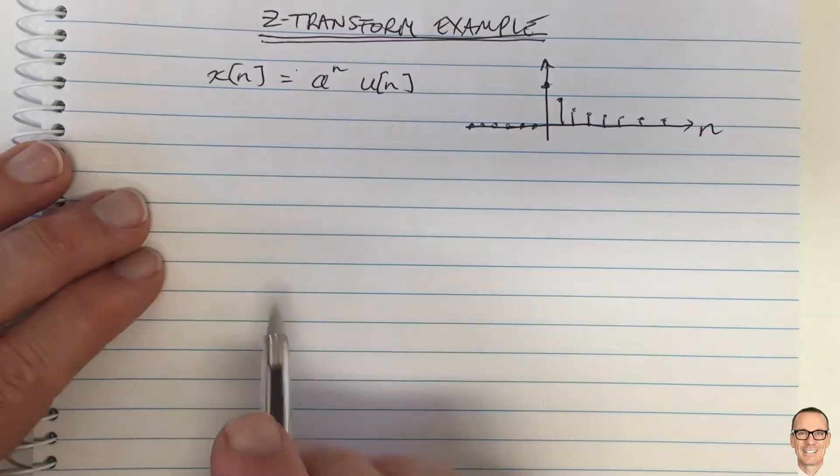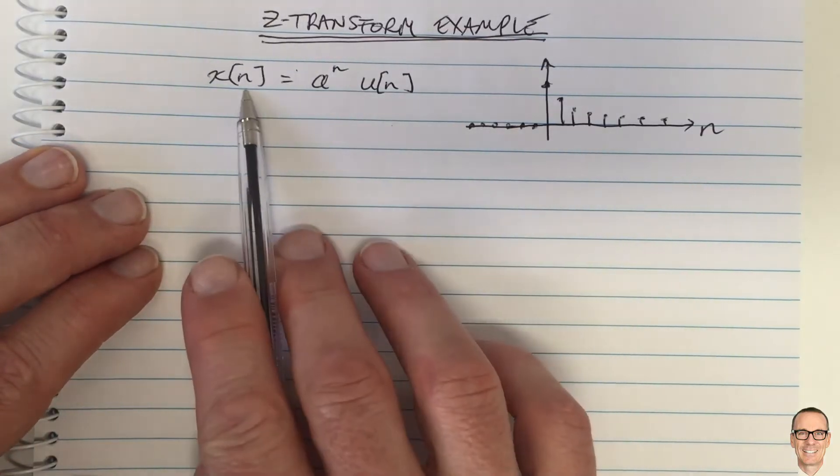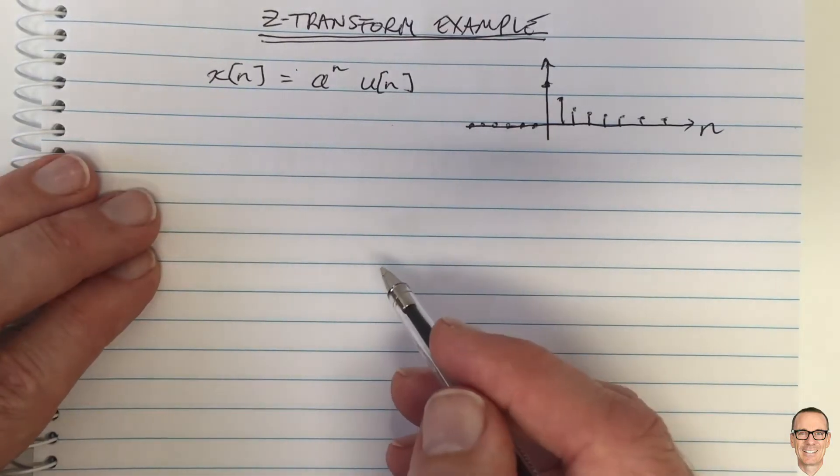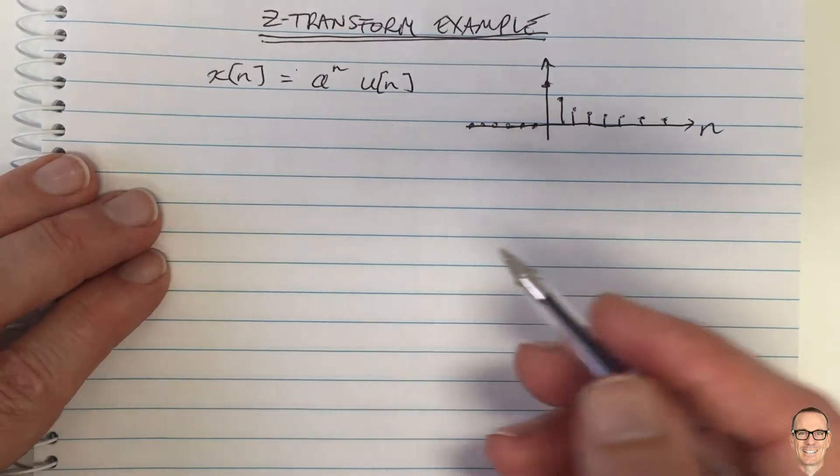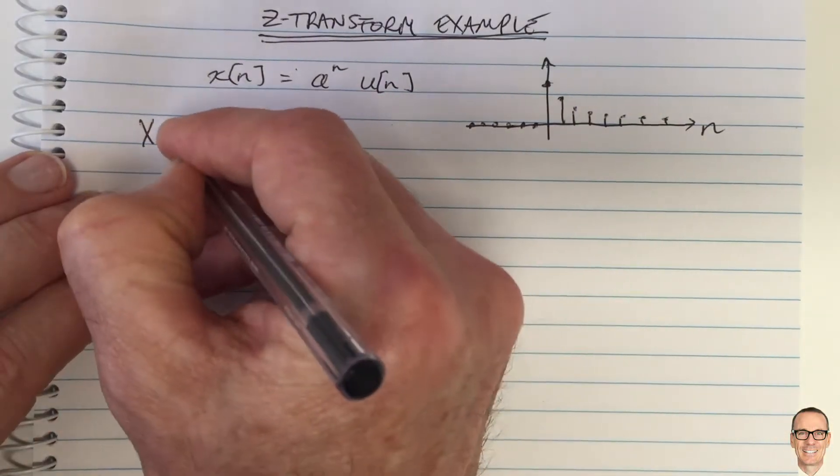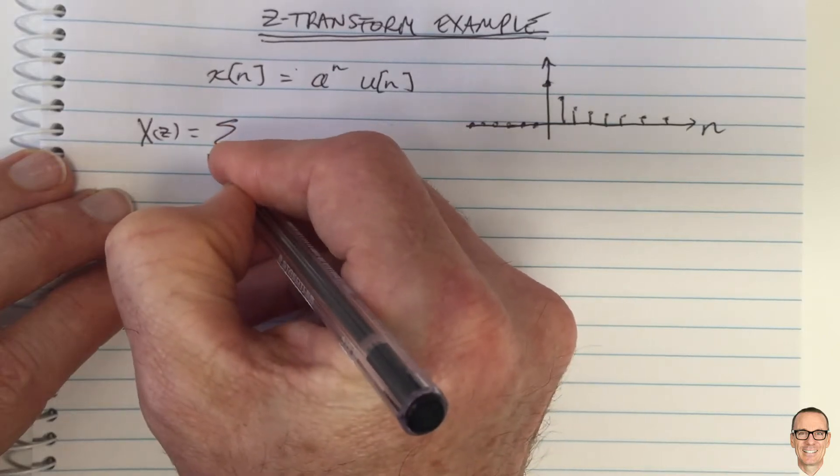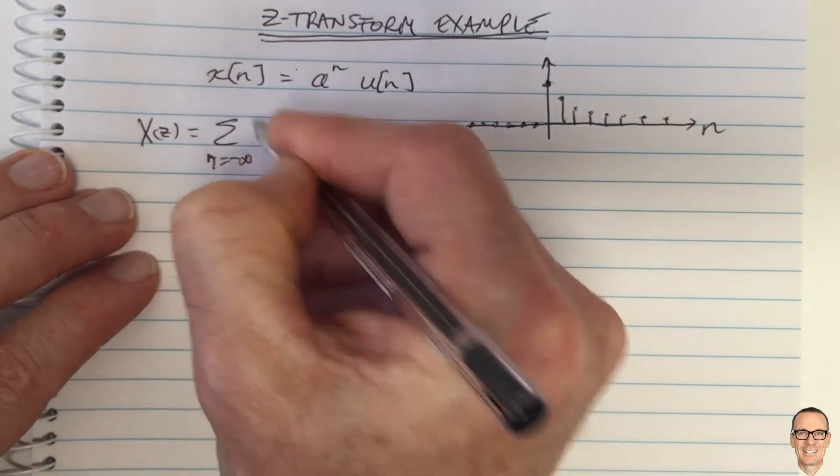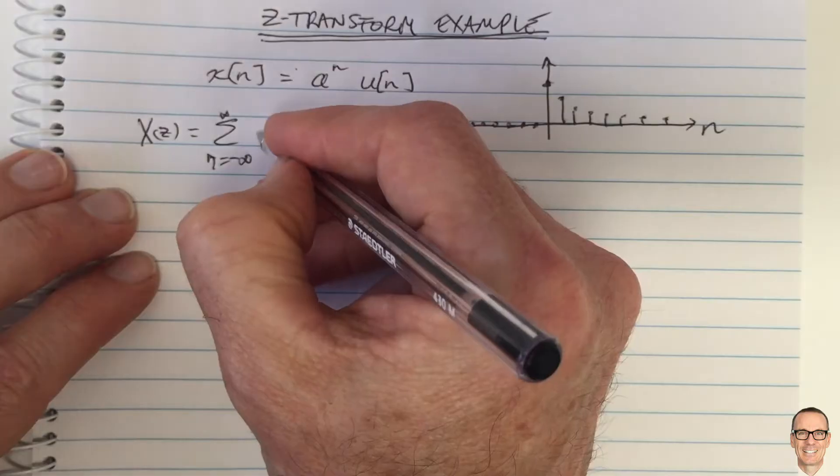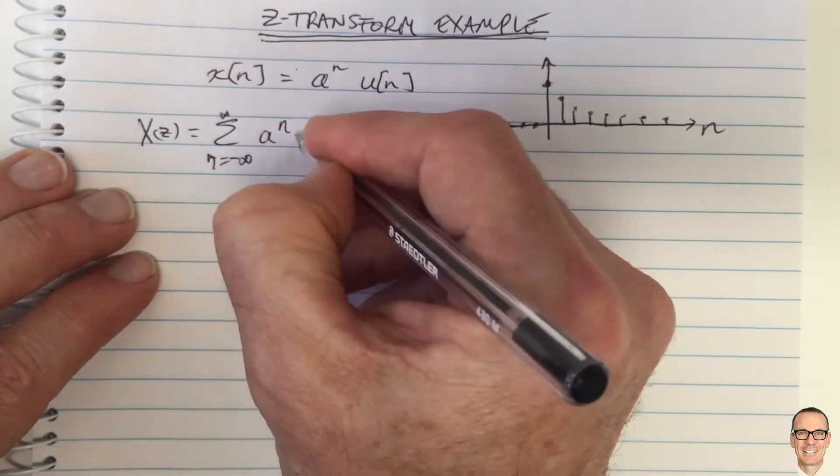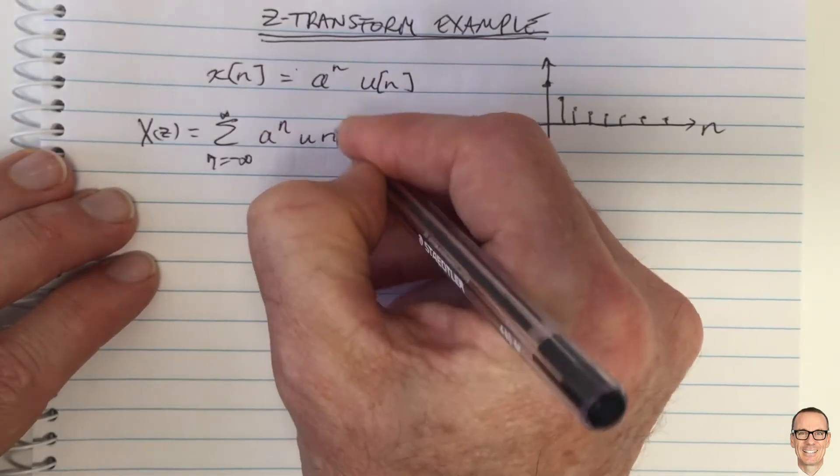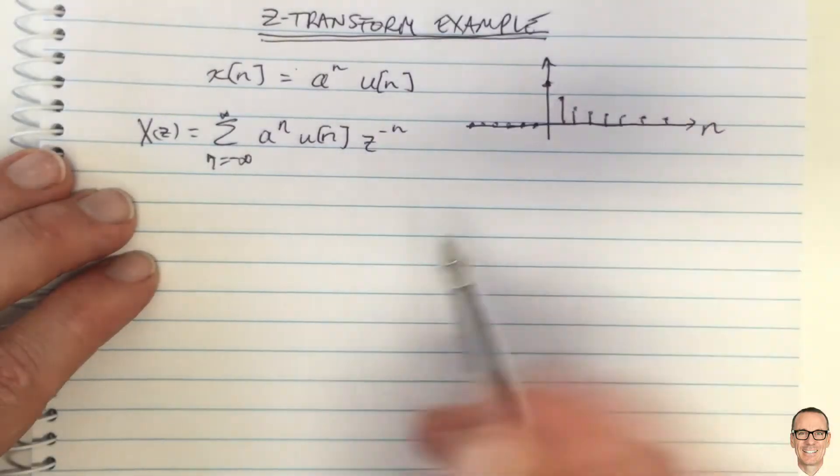And now we want to take the Z-transform. It's a discrete time signal, and we are interested, therefore, in the Z-transform. So the formula here, X of Z equals from n equals minus infinity to infinity of a to the n u of n times Z to the minus n.